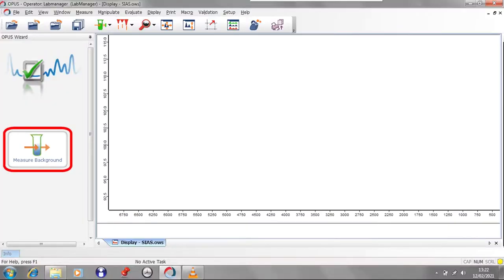Select Measure Background on the left-hand side of the screen. The program will run 10 scans of the background which will be averaged. This background reading will then be subtracted from the later sample measurements. Once the background measurements complete, the Measure Sample button will appear on the left and you can now move on to the sample analysis.